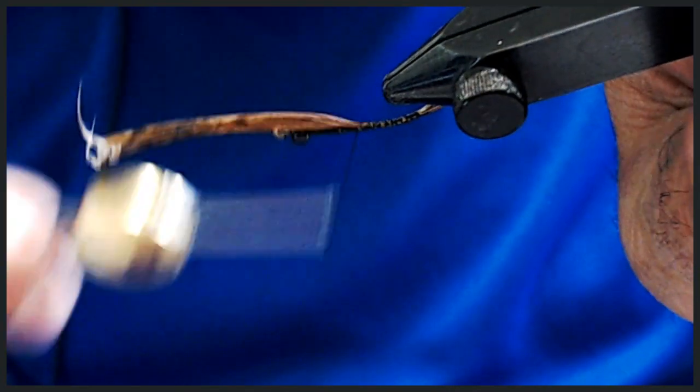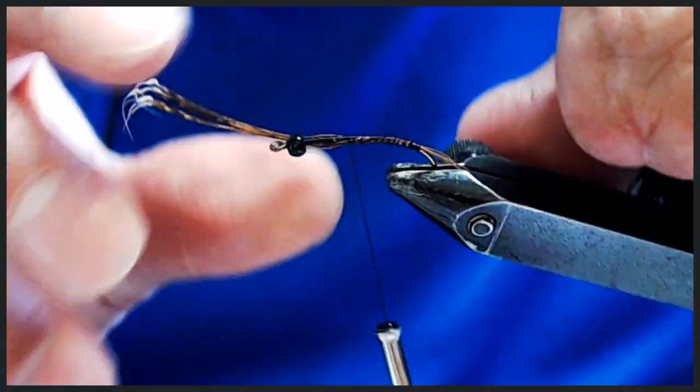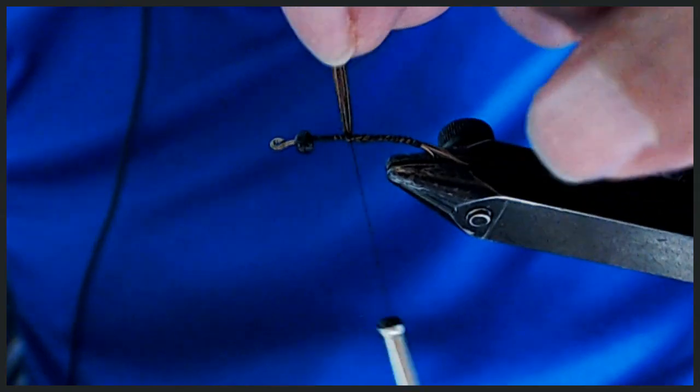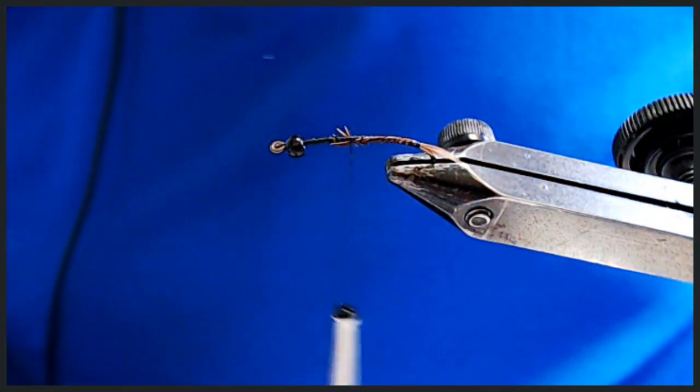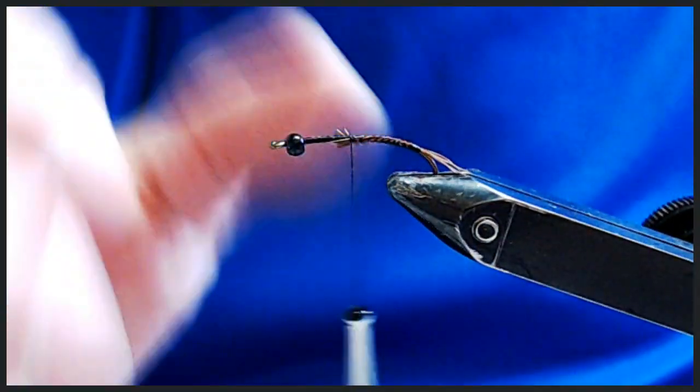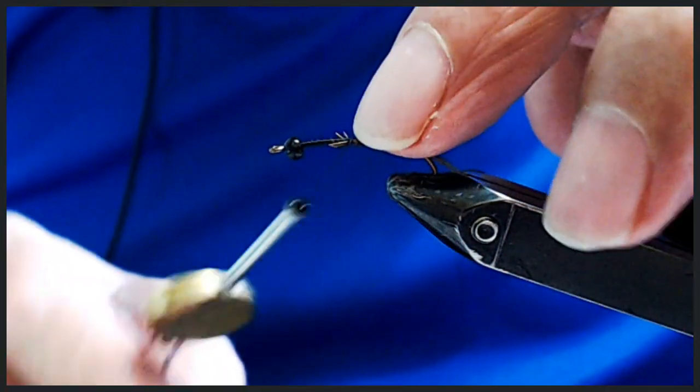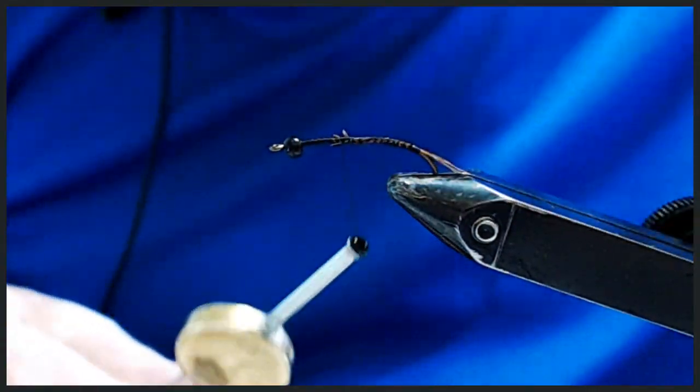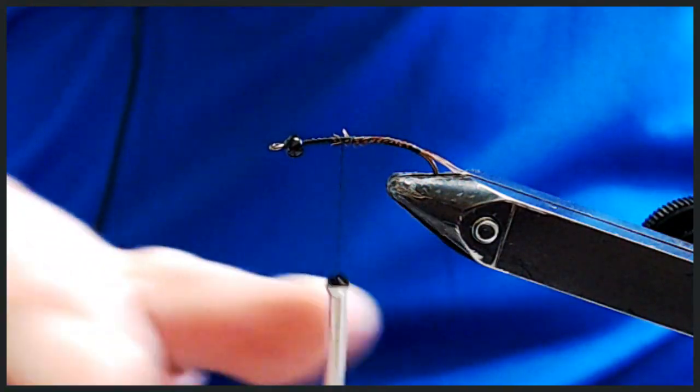I'm going to run my thread back up to about a third of the shank. The body will be on the back portion and then we'll do the thorax and wings.